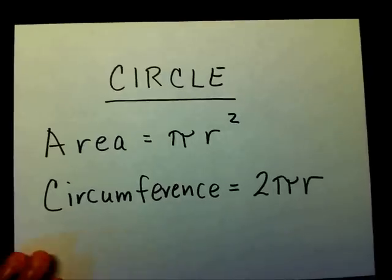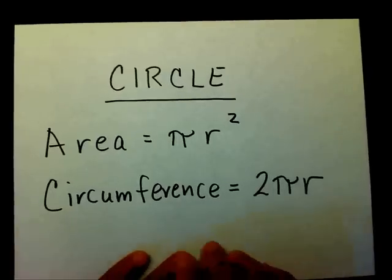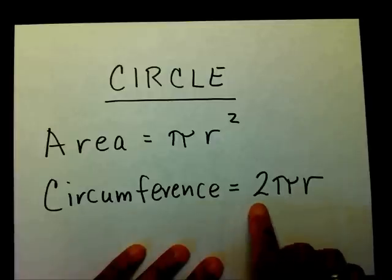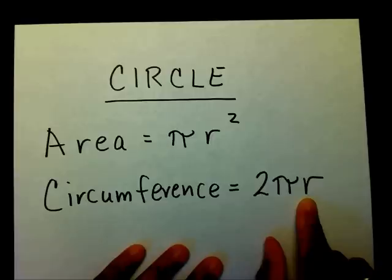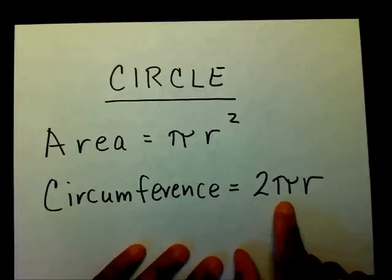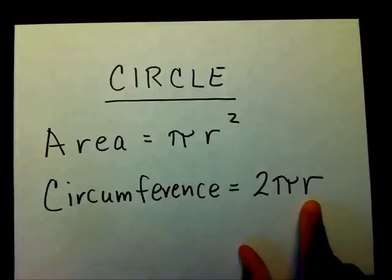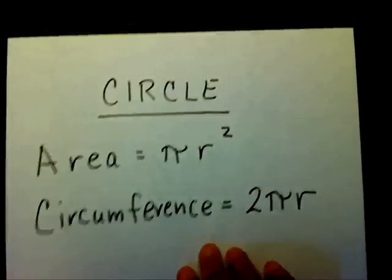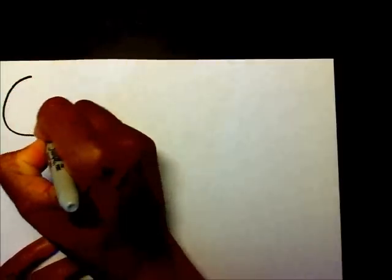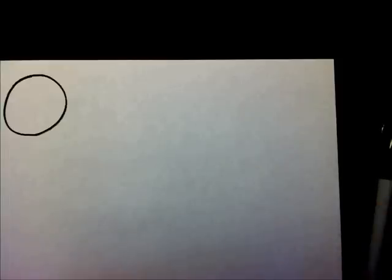So we want to find the circumference of a circle. In order to find the circumference of a circle, we're going to use the formula C equals 2 pi r. We're going to take 2, multiply it times pi, then by r. The circumference is the distance around a circle.